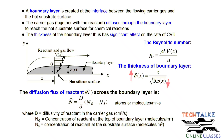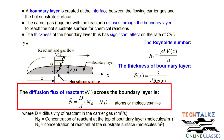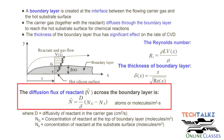The diffusion flux of the reactant across the boundary layer is directly proportional to the diffusion coefficient (diffusivity D) and inversely proportional to the boundary layer thickness Δ. That is: flux = D/Δ multiplied by (N_G − N_S), where N_G is the concentration of the reactant at the top of the boundary layer and N_S is the concentration of the reactant at the substrate surface.